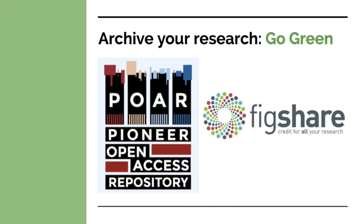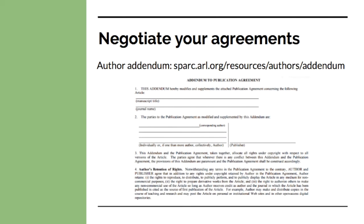If you decide that publishing open access is not right for you, or you've already published your research, you can go green by archiving your research. There are many great repositories, but the first two I'd recommend to students and early career researchers are TWU's Institutional Repository — the Pioneer Open Access Repository — and Figshare.com. Figshare can be a fantastic repository for graduate students, and you can include papers, dissertations, posters, data sets, and videos. But before you archive, make sure you have the right to. Often publishers require full transfer of copyright, and you may not be allowed to archive your research. If you need help understanding your agreement or figuring out what archiving rights you have, get in touch. If you haven't published yet, negotiate your agreements so you can retain more of your copyright. Check out the next video workshop in the series, Copyright and Your Rights, for more information.